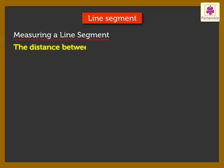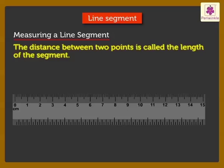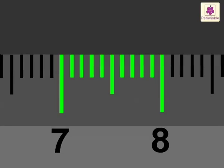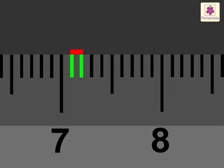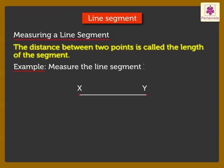Now let us see how to measure a line segment. The distance between two points is called the length of the segment. To measure a line segment we use a ruler. A ruler is marked with centimeters. Each centimeter is divided into ten parts, each part is one millimeter.